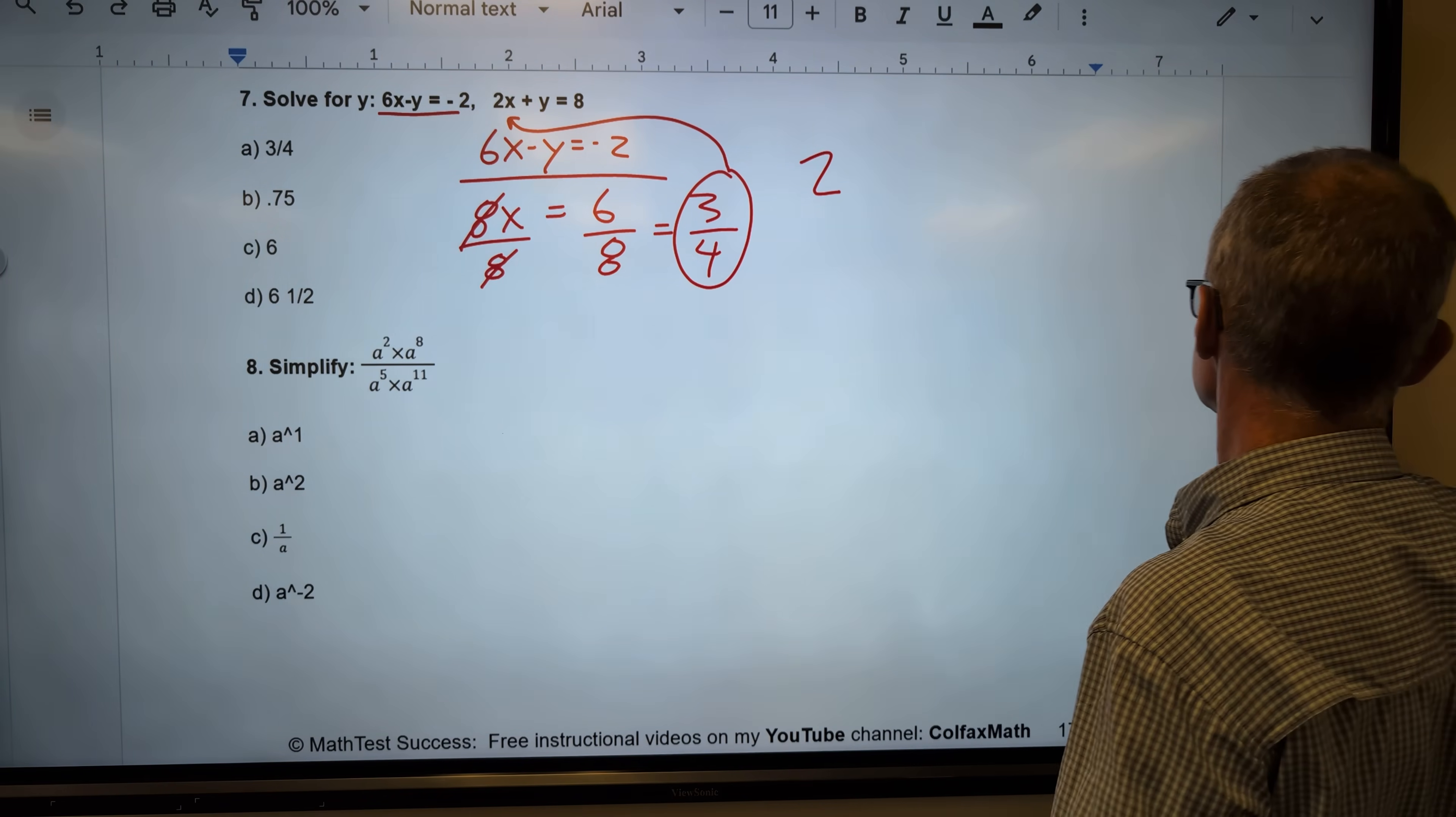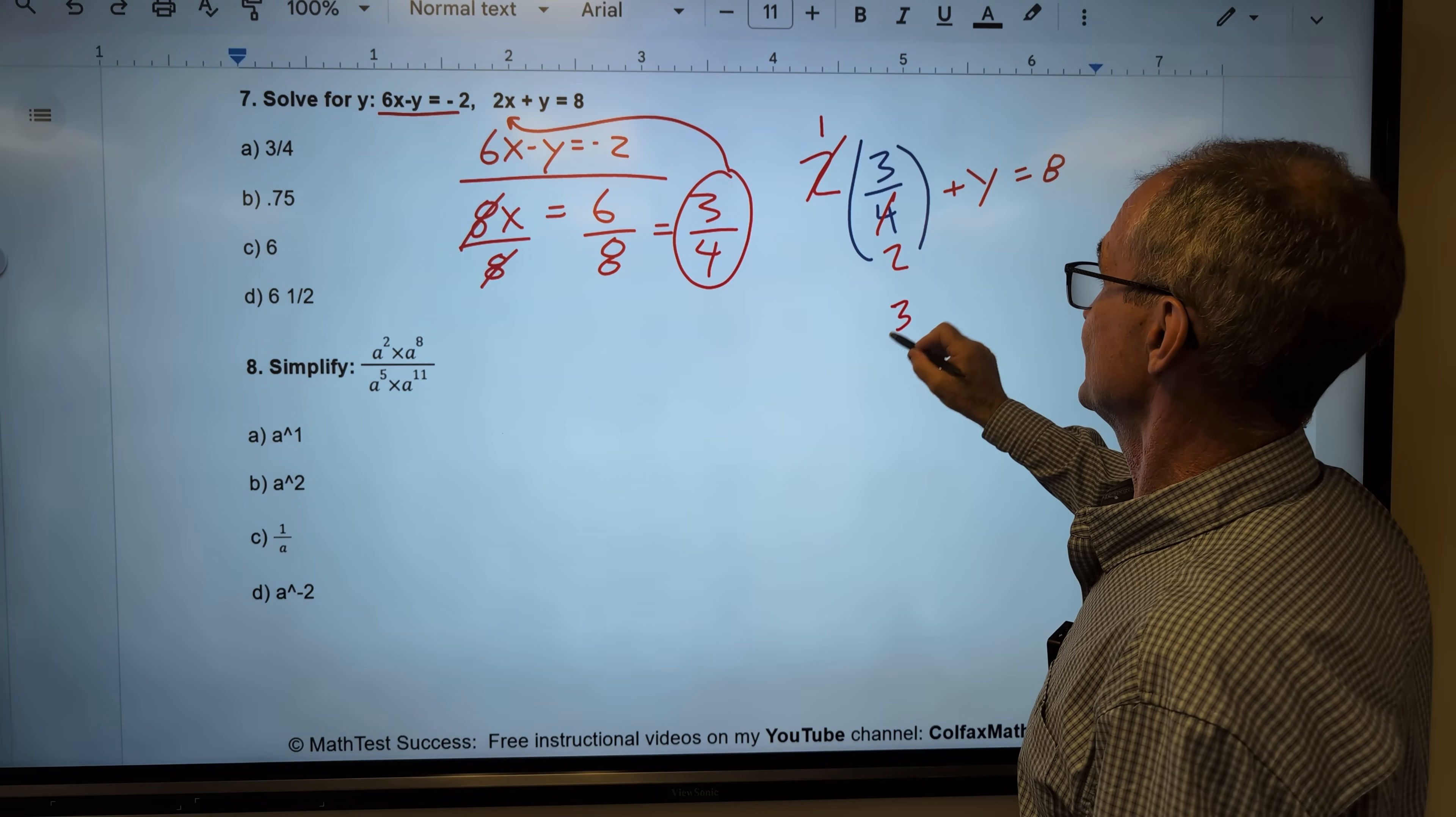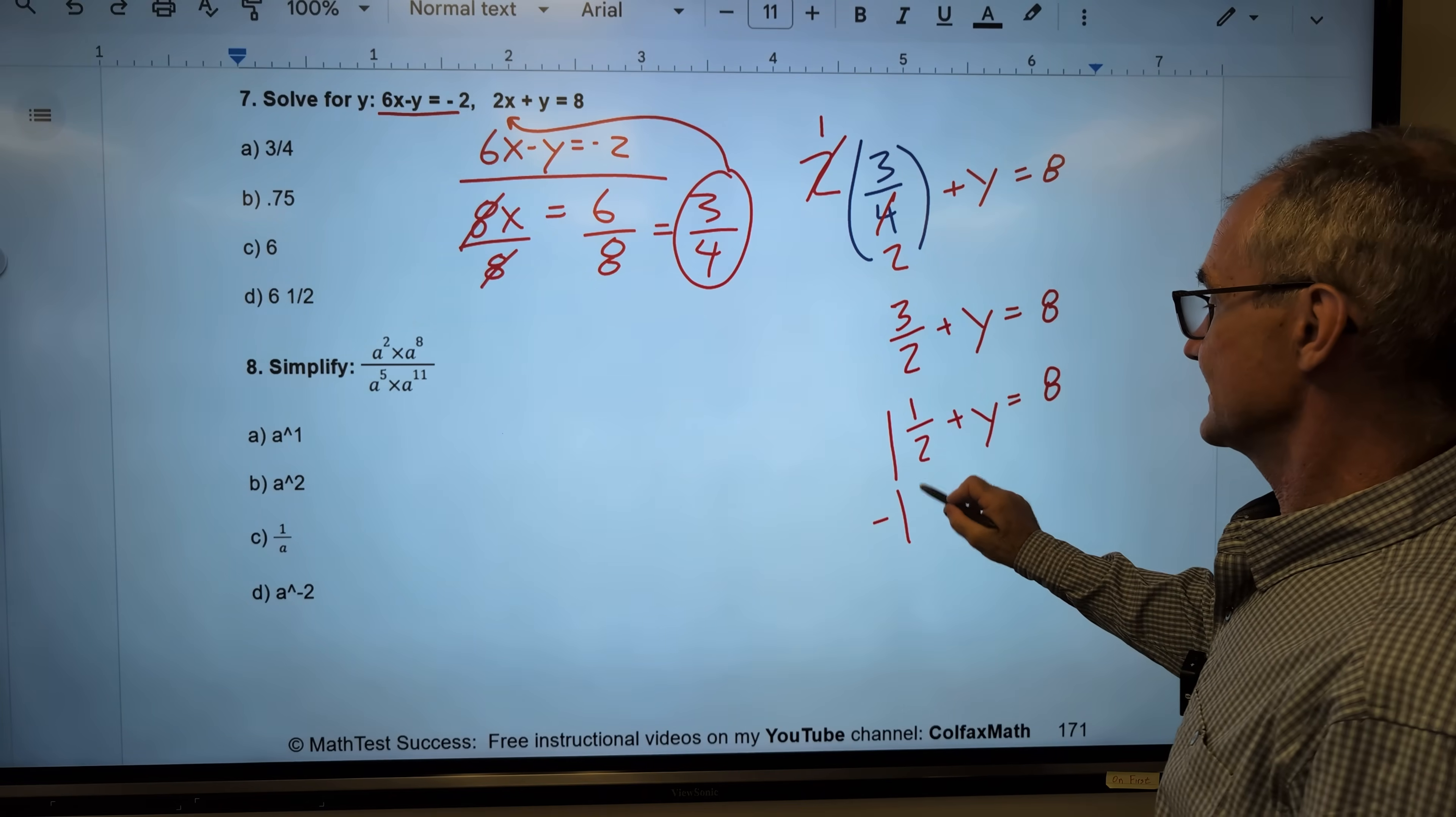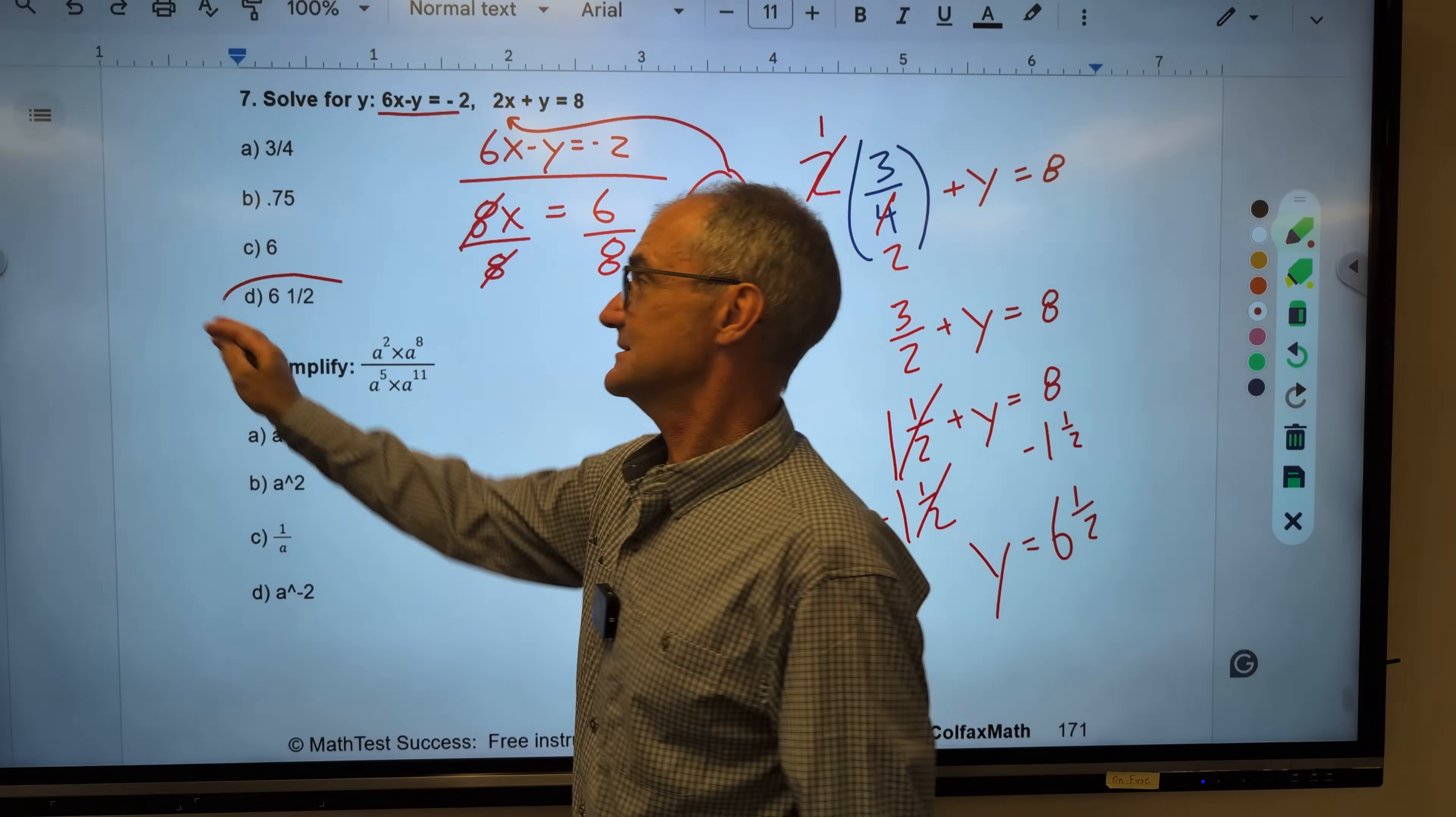2 times x. x is 3 fourths plus y is equal to 8. I have to simplify a little bit. I am multiplying fractions. No common denominators. But 2 will go into here once and into here twice. So that's going to give me 3 halves plus y is equal to 8. 3 halves. 2 goes into 3 one time with 1 left over is the same as 1 and 1 half is equal to 8. I'm going to subtract 1 and 1 half from both sides. These are going to cancel. These are going to cancel. Give me y by itself. I could turn this into a mixed number, get a common denominator, and do those fractions. Or I could just think 8 minus 1 is 7. Minus another half is 6 and 1 half. Correct answer, answer D right there.